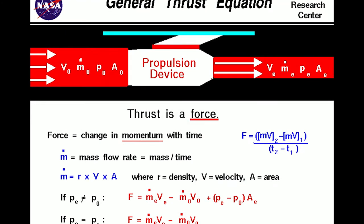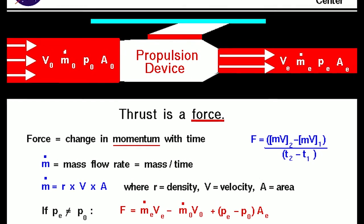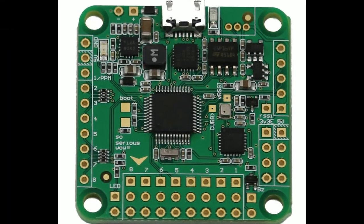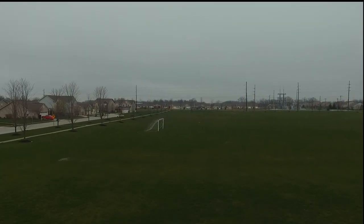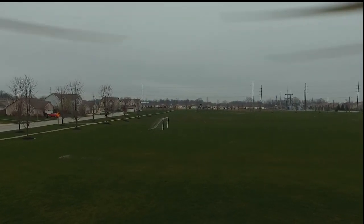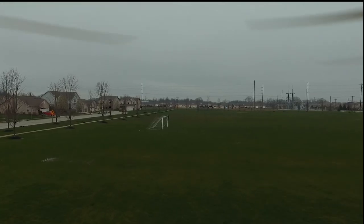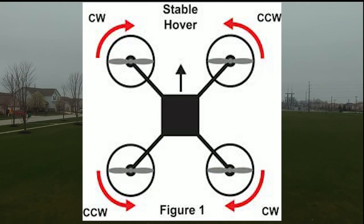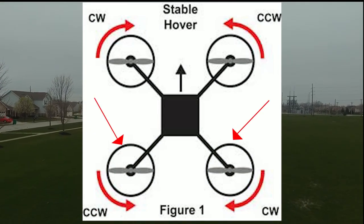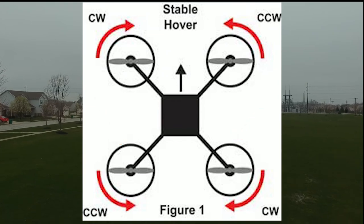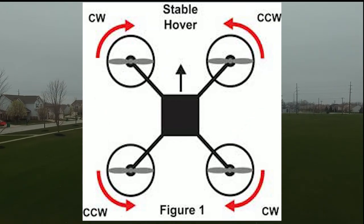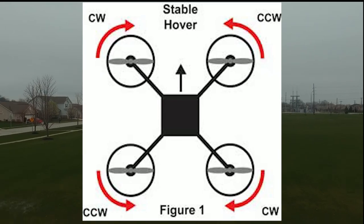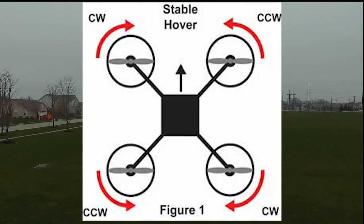Thrust is a force that, when greater than the force of gravity, will propel you in that direction. With the help of electronic and computer-based processing, quadcopters can change the speed of their individual motors, which allows their flight to be directional as opposed to linear. For example, if the back two motors speed up, the quadcopter will tilt forward. This is a result of the thrust of the back lifting the quadcopter to a slight angle, so some of the lift force will move the quadcopter forward.